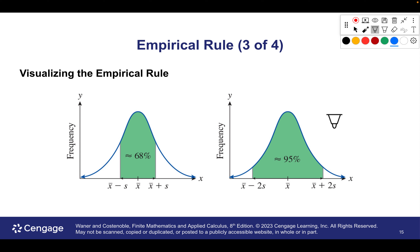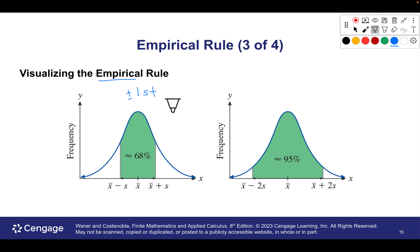We went through the empirical rule — there was also some other rule I can't remember the name of now. There was one question that used it — something like 75% within two standard deviations for a non-normal distribution. You won't have to know that one on the test. The test focuses on the normal distribution, so there's the empirical rule: approximately 68% are within one standard deviation, and 95% are within plus or minus two standard deviations.